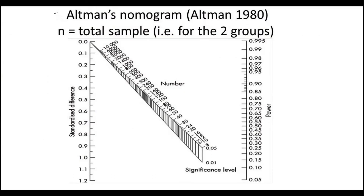Look at the picture of Ordman's nomogram. It is a graph with two vertical scales and two sloping lines in the middle. On the left is a vertical scale for standardized difference, marked in equal intervals from 0.0 at the top to 1.2 at the bottom. On the right is a vertical scale for power, marked in intervals of increasing size from 0.995 at the top to 0.05 at the bottom. The upper sloping line is labeled significance level 0.05.